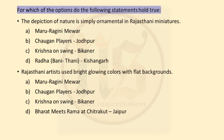For which option do the following statements hold true? The depiction of nature is simply ornamental in Rajasthani miniatures. Maru Ragini has desert; Chogan Players has flat background; Radha Banithani is a portrait with flat background. So the correct answer is Krishna on Swing, that is Bikaner sub-school, in which the lower panel has two trees done in a stylized panel — nature is simply ornamental, enhancing the overall theme of the painting. Moving on: Rajasthani artists used bright, glowing colours with flat background. Which of the following has flat background? Chogan Players from Jodhpur — we see women on horses on a flat background and colours are also bright and glowing. So our correct answer is B, Chogan Players.